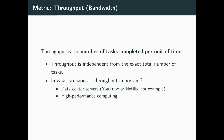A few scenarios where throughput might be important: data center servers. YouTube and Netflix have terabytes of data coming out of their servers every second, basically. Their task is to give the user the next five seconds of their video — they have to have very high throughput in a very short amount of time. High performance computing also matters — if you have a distributed cluster and there's a lot of data passing between nodes, you really need that throughput to be very high in those situations.